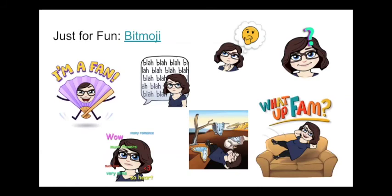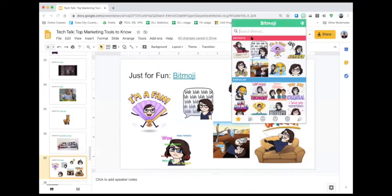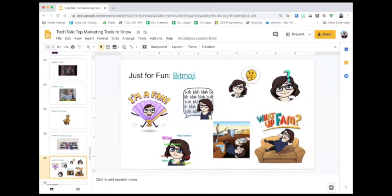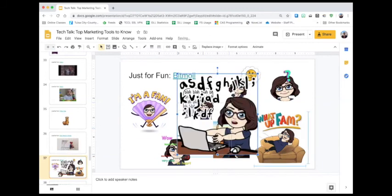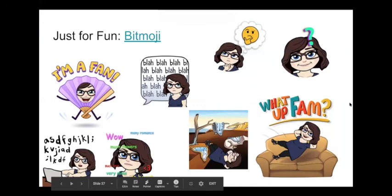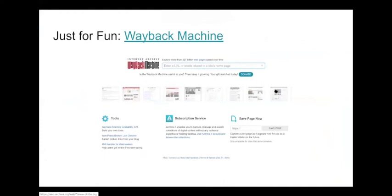One more fun tool is Bitmoji. If you've noticed throughout this presentation there have been tiny little Caitlins doing weird things — that's Bitmoji. If you have Snapchat you've probably seen it before. Essentially it creates a little character of yourself. With the browser extension you can see your Bitmoji in different situations — search for something like 'using a computer,' right-click copy, go to your presentation and paste it — and there's a little Bitmoji of Caitlin sitting at a computer. You can use it in email or to make your presentations more fun.